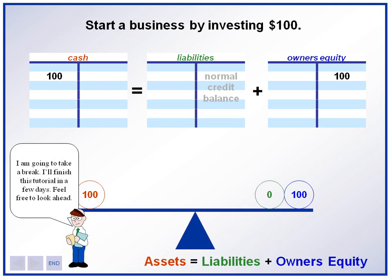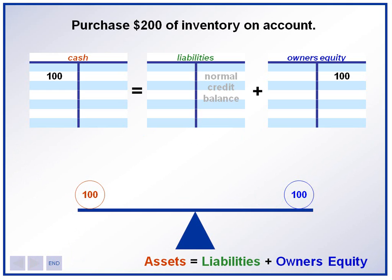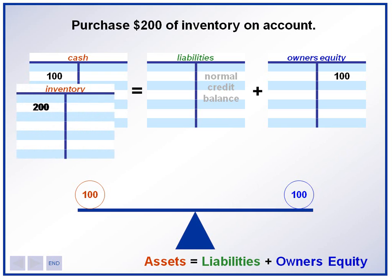Now we are going to look at a liability account. We are going to purchase $200 of inventory on account. What accounts do you think would be affected here? First, we are going to debit inventory for $200. This represents the increase in inventory. For example, if we sold shirts, we would record $200 worth of shirts that we now own.